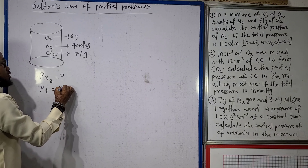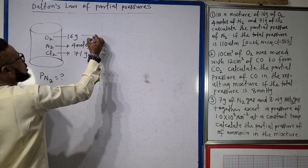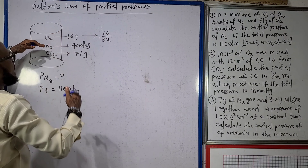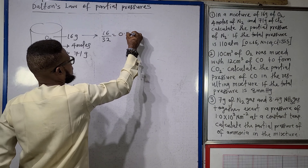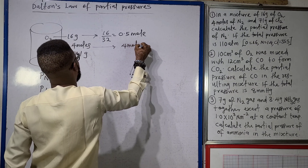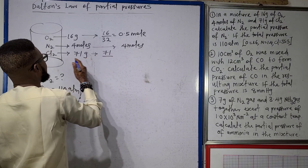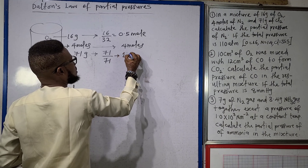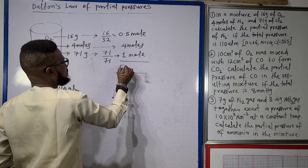First, convert everything to moles. Oxygen: 16g ÷ 32 g/mol = 0.5 mol. Nitrogen: already given as 4 moles. Chlorine (Cl₂): 71g ÷ 71 g/mol (since 35.5 × 2) = 1 mole. Adding these together: 0.5 + 4 + 1 = 5.5 moles total.